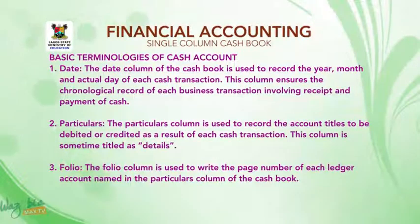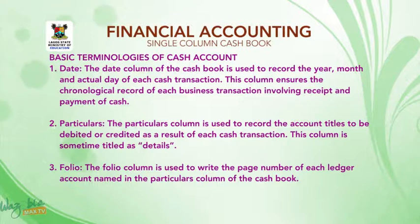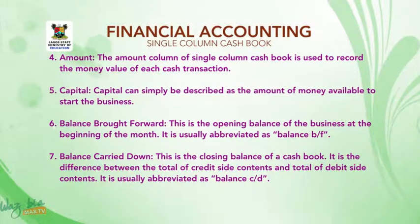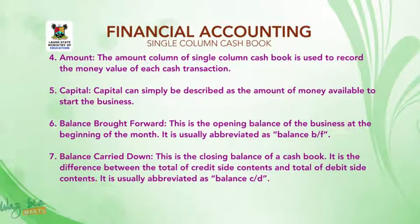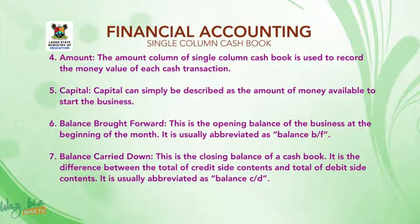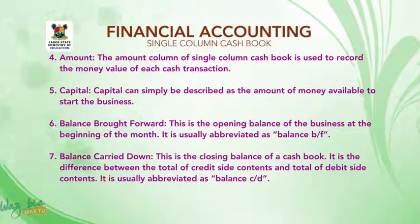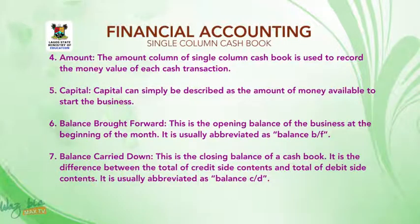Number three: Folio — the folio column is used to write the page number of each ledger account named in the particulars column of the cashbook. Number four: Amount — the amount column of single-column cashbook is used to record the money value of each cash transaction. Number five: Capital — capital can simply be described as the amount of money available to start the business. Number six: Balance brought forward — this is the opening balance of the business at the beginning of the month, usually abbreviated as balance B/F. Number seven: Balance carried down — this is the closing balance of a cashbook; it is the difference between the total of the credit side and the total of the debit side, usually abbreviated as balance C/D.